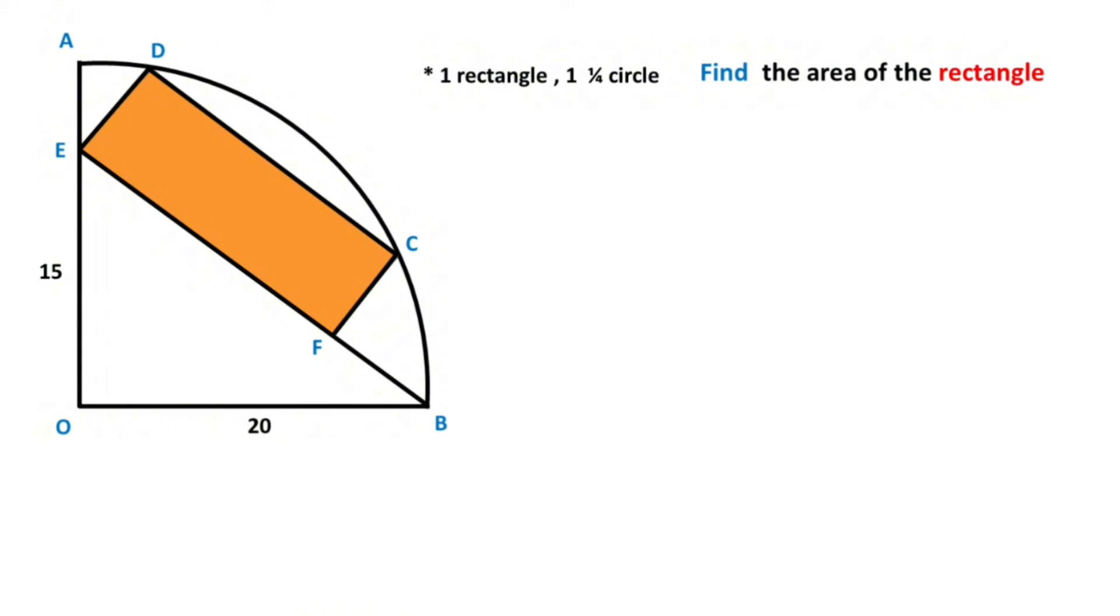Hello everyone, in this video we have one rectangle, one quadrant circle. Point O is given as the center of the quadrant circle, and the radius of the quadrant circle is given as 20. Here is given 15, and the question is: what is the area of the rectangle?